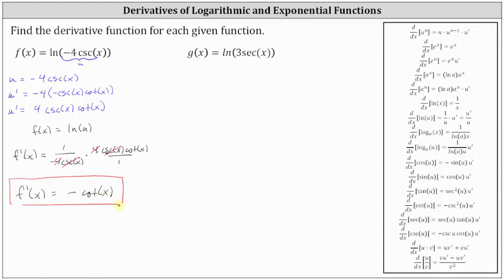Let's take a look at the second example, where we have g of x equals natural log of three secant x. Again, we have a composite function where the inner function u is equal to three secant x. We need to find u prime to apply the chain rule, where u prime is equal to the derivative of three secant x, which is three times the derivative of secant x. The derivative of secant x is secant x times tangent x, and therefore u prime is equal to three secant x times tangent x.